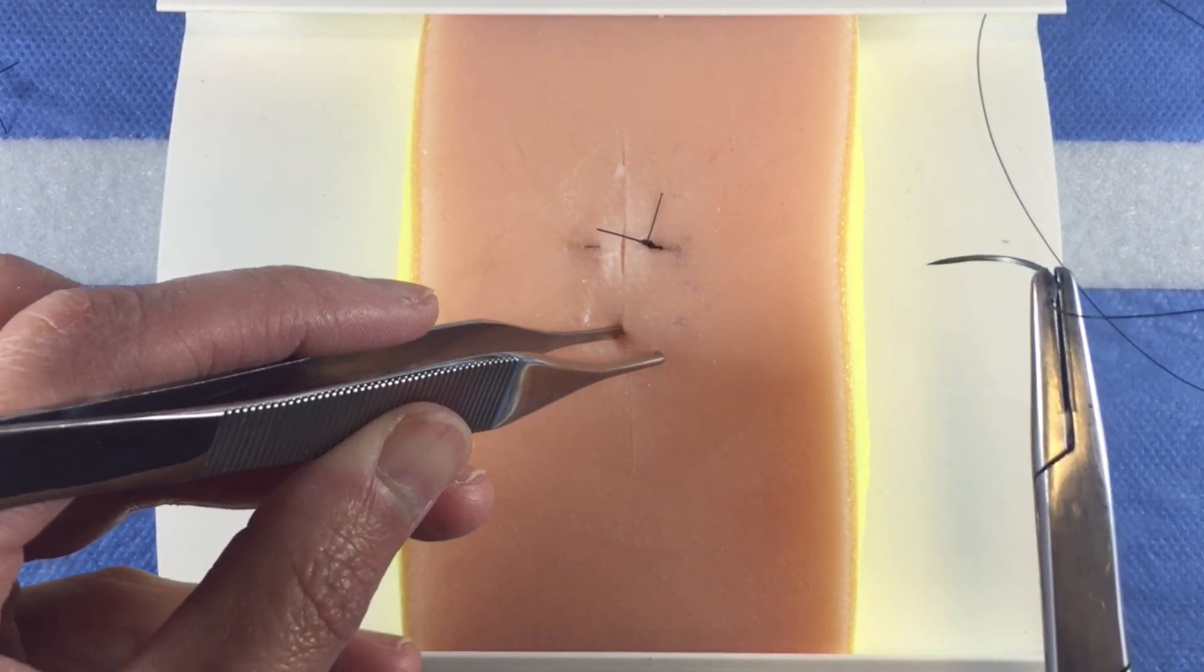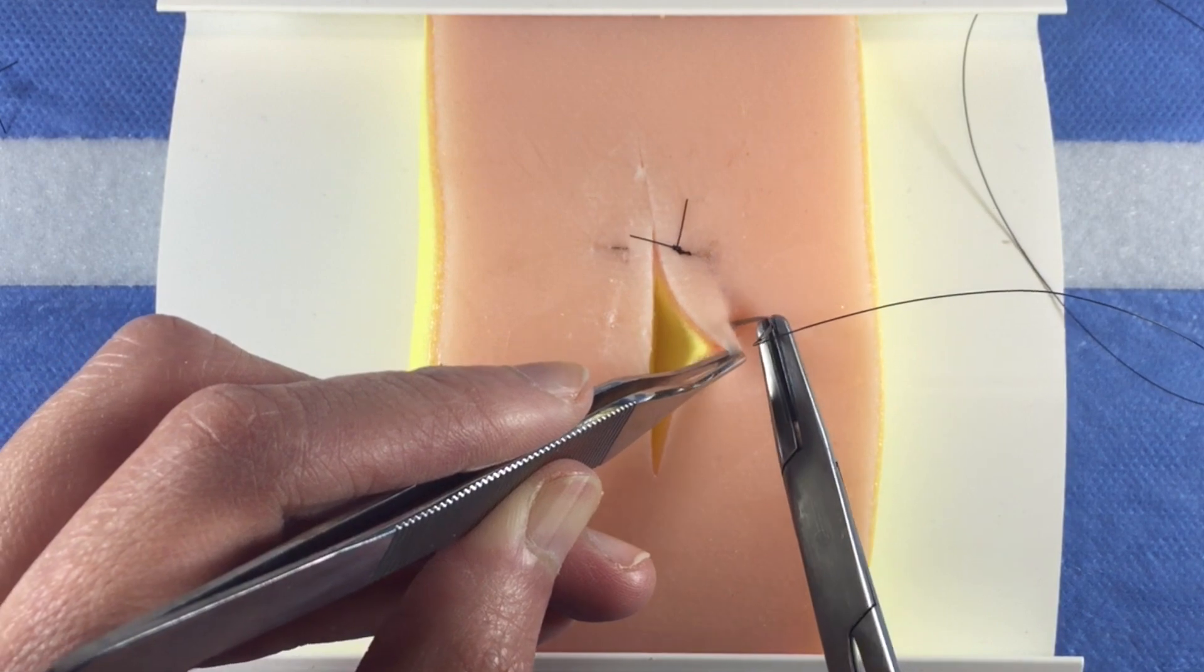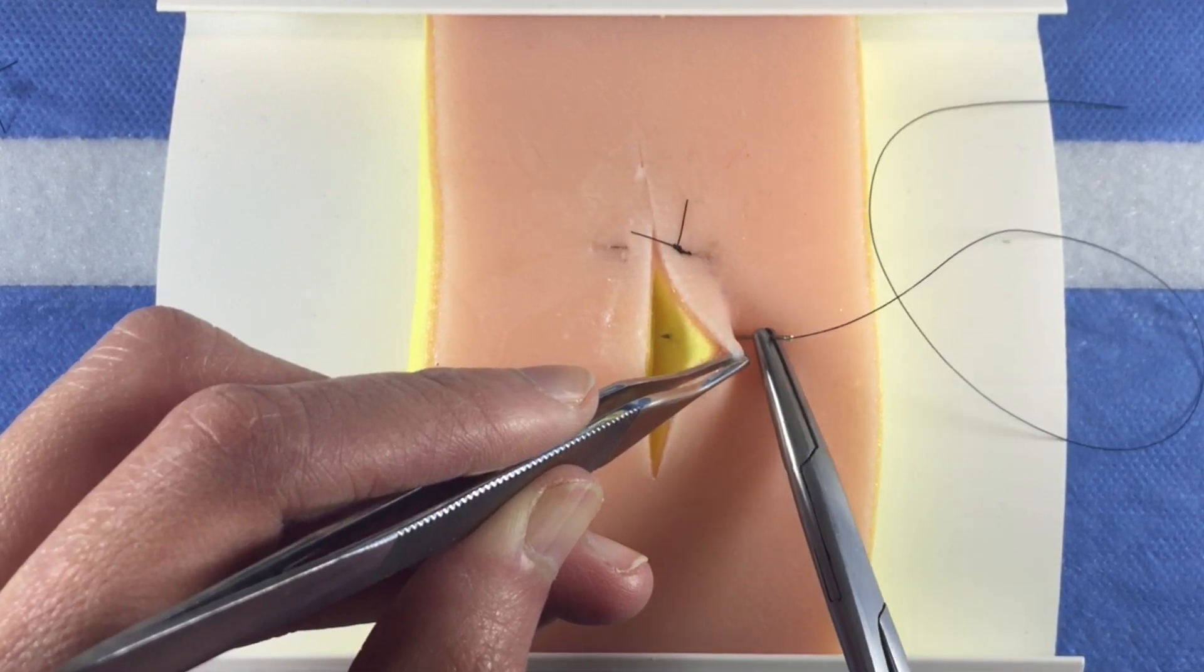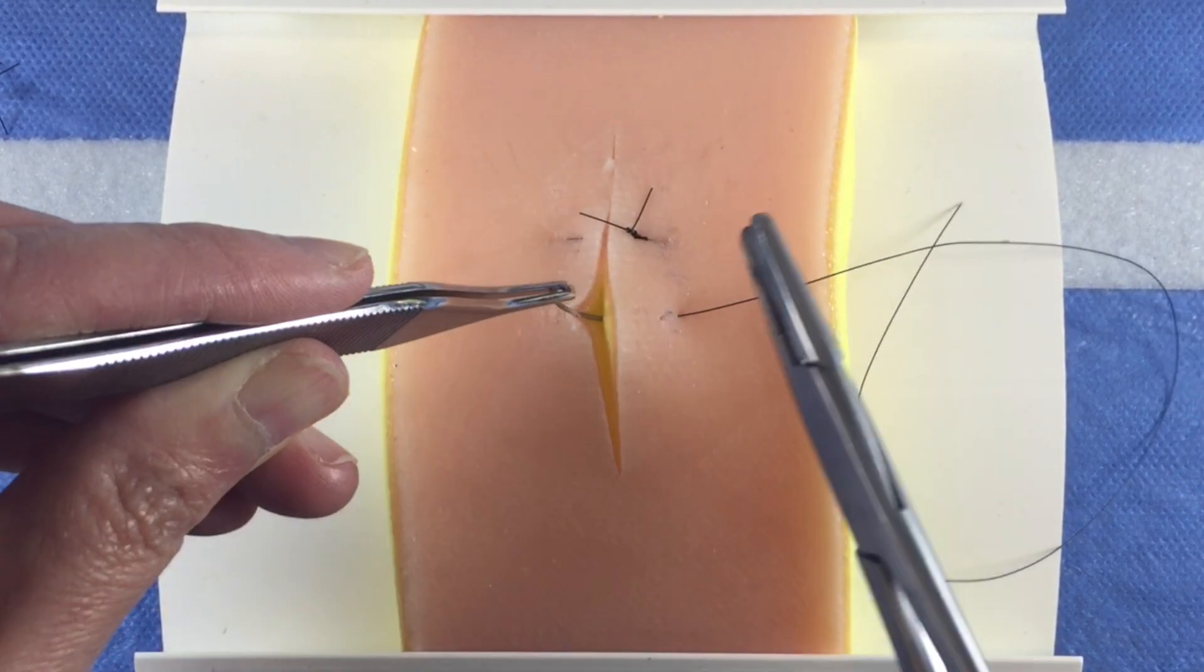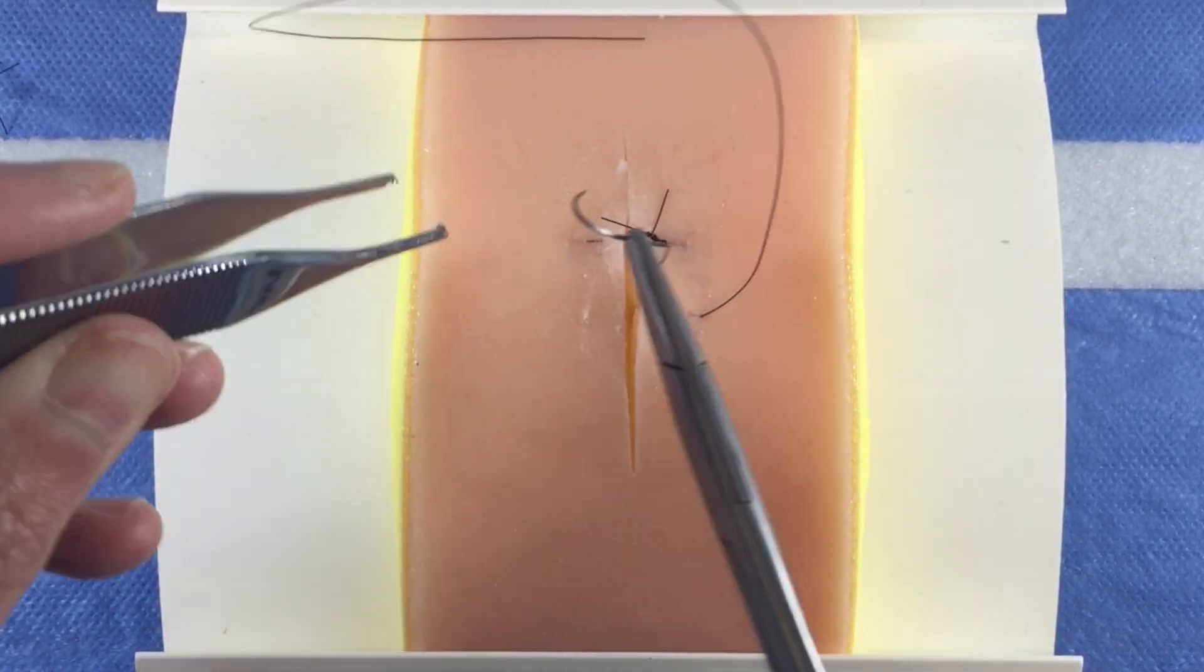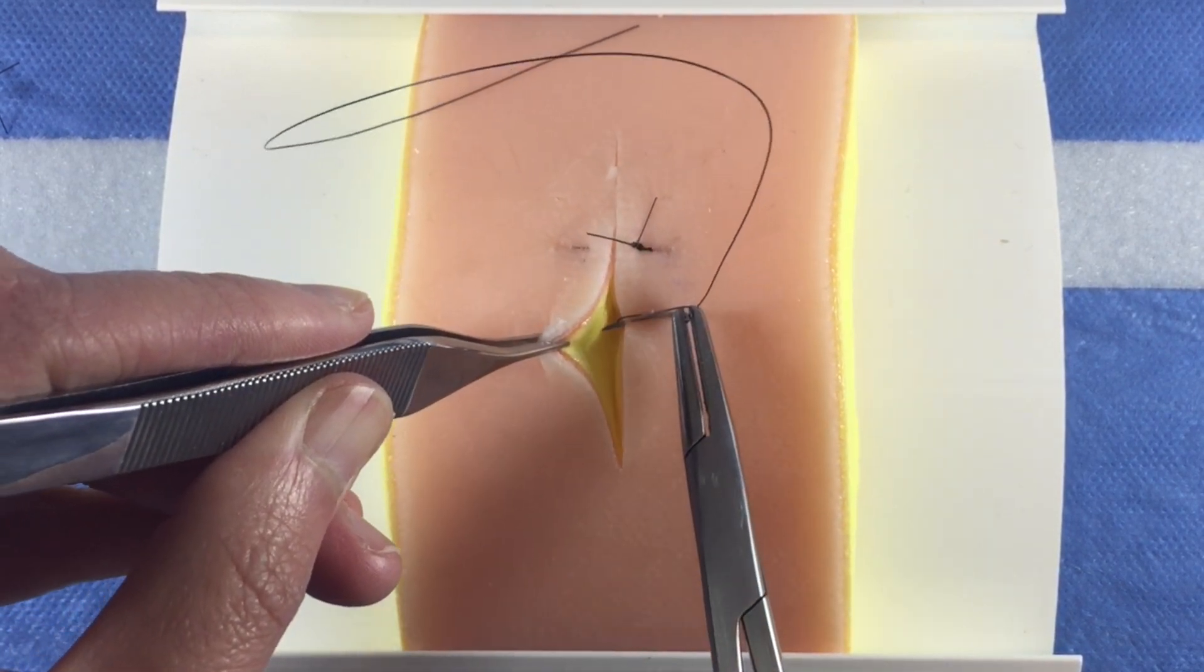To perform a vertical mattress stitch, start a distance away from the wound edge on one side. Place a deep bite. It may be best to take the bite in two steps, that is grab and reload the needle halfway through and use a separate bite to come through the opposite side.